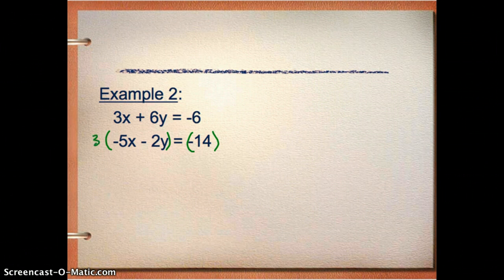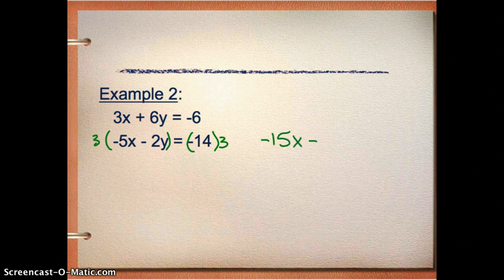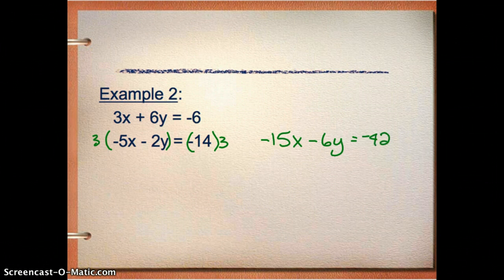So in this case, I'm going to multiply this equation by 3 because then I'm going to get negative 6 there. So that new equation is going to be negative 15x minus 6y equals negative 42. In my first equation, it didn't change. It stays the same.